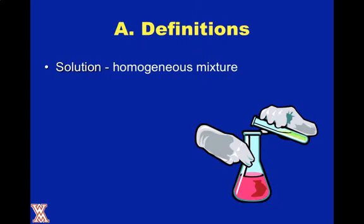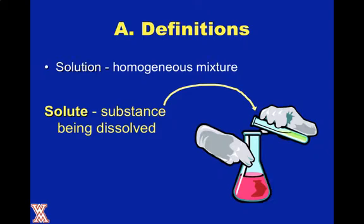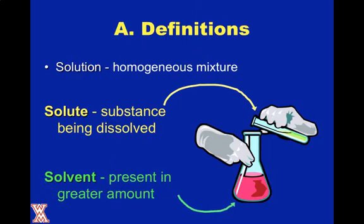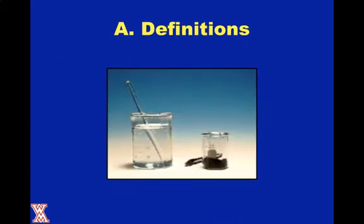You should remember from chapter two that a solution is a homogeneous mixture, meaning that it is uniform all the way throughout, and a solution has two parts. A solute, which is the substance being dissolved, typically we think of a solute as a solid, though that's not always the case, and a solvent, which is the substance that is doing the dissolving.